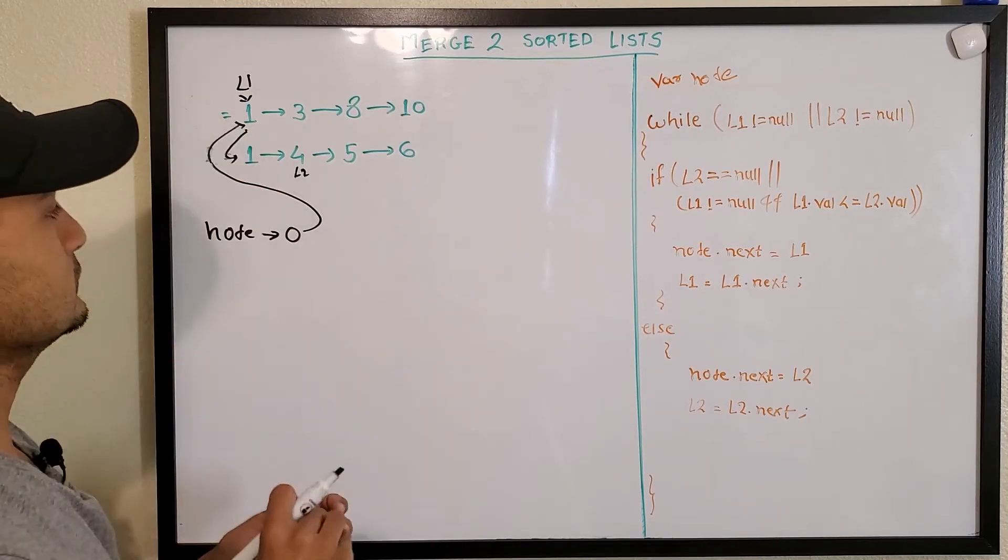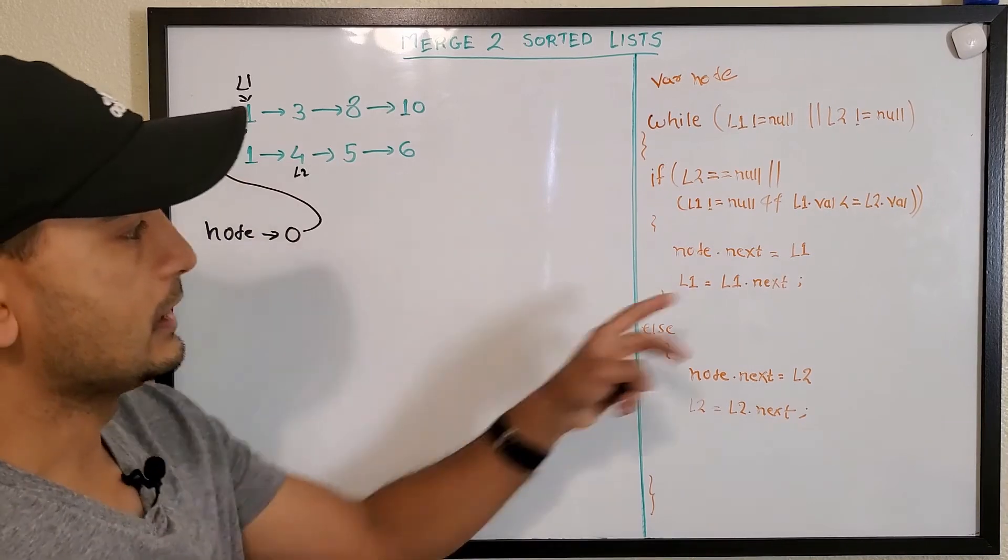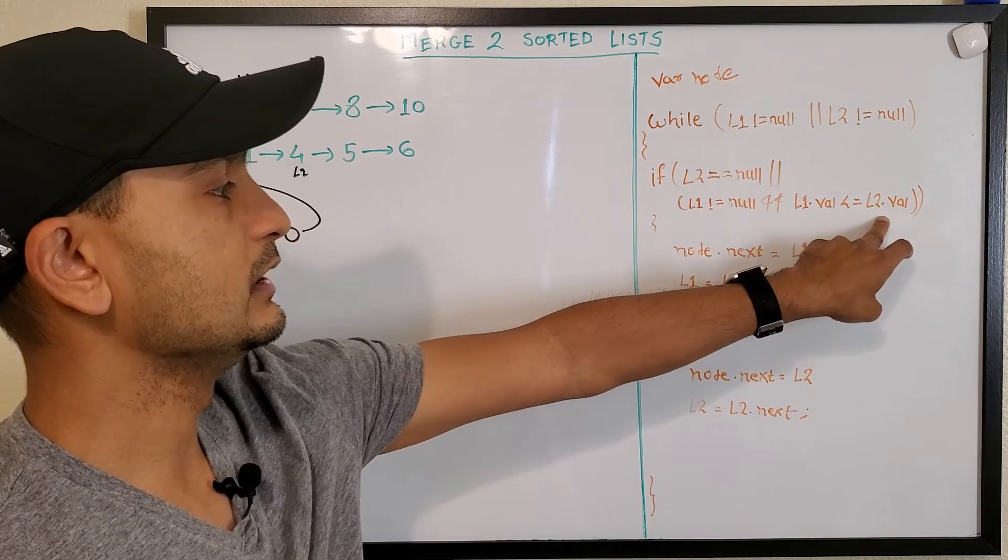So yeah, our list is now 0, 1, 1, and same thing. L1 value is less than L2 value?